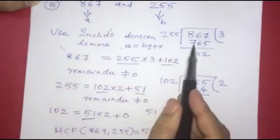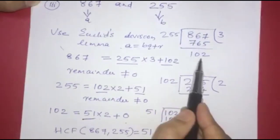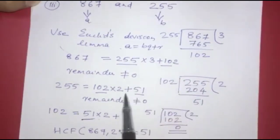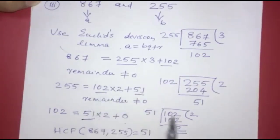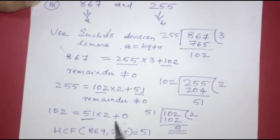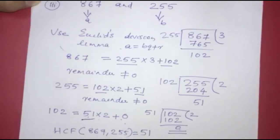When the remainder becomes 0, we stop. The divisor at that step, B, is the HCF. So the HCF of 867 and 255 is equal to 51.